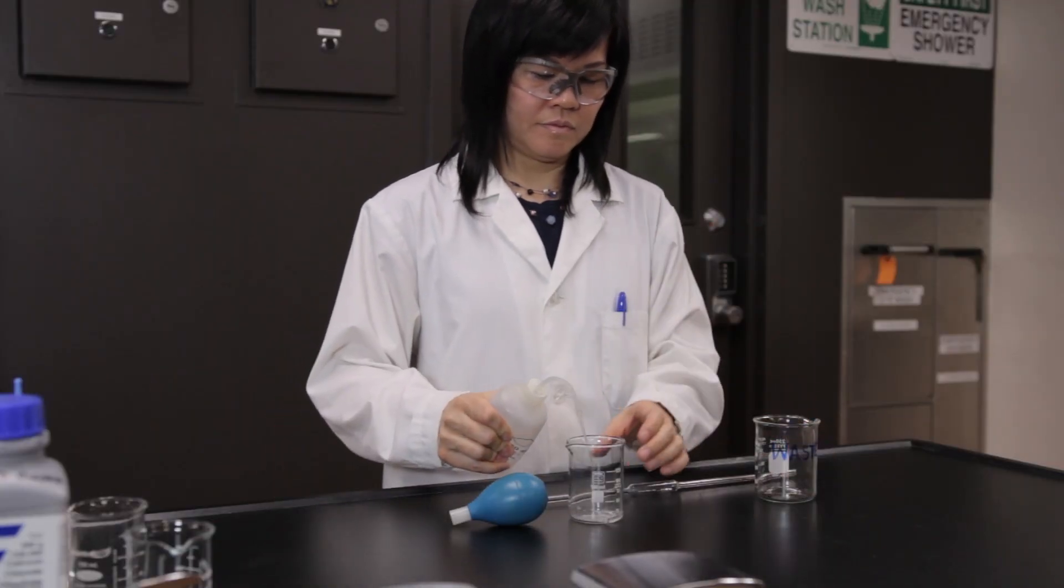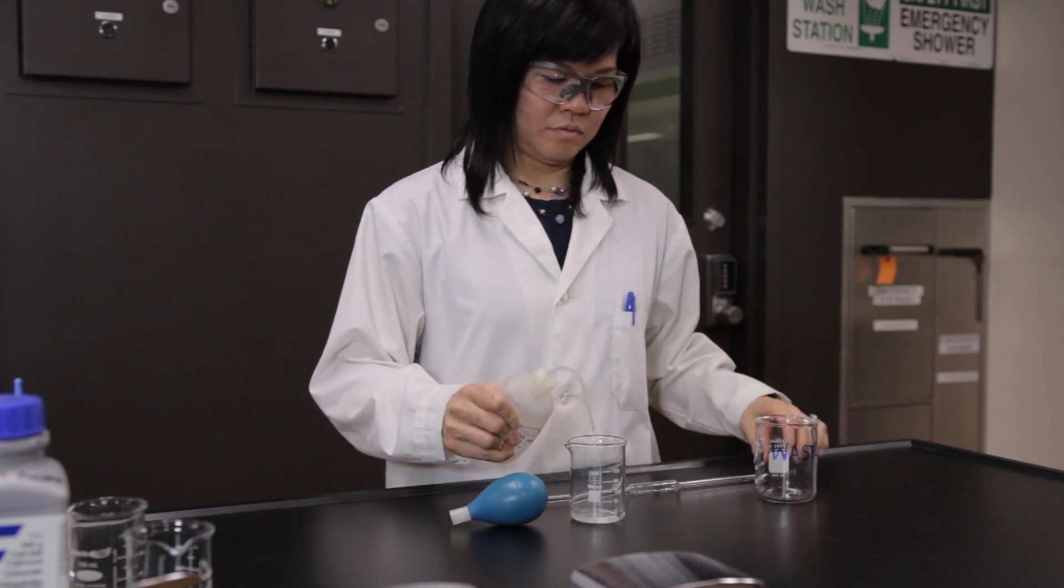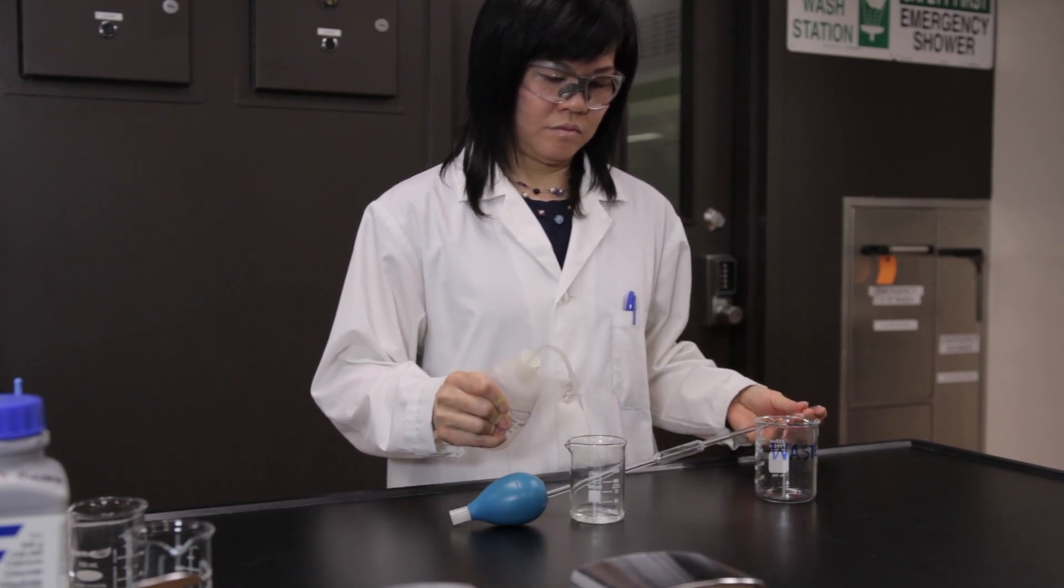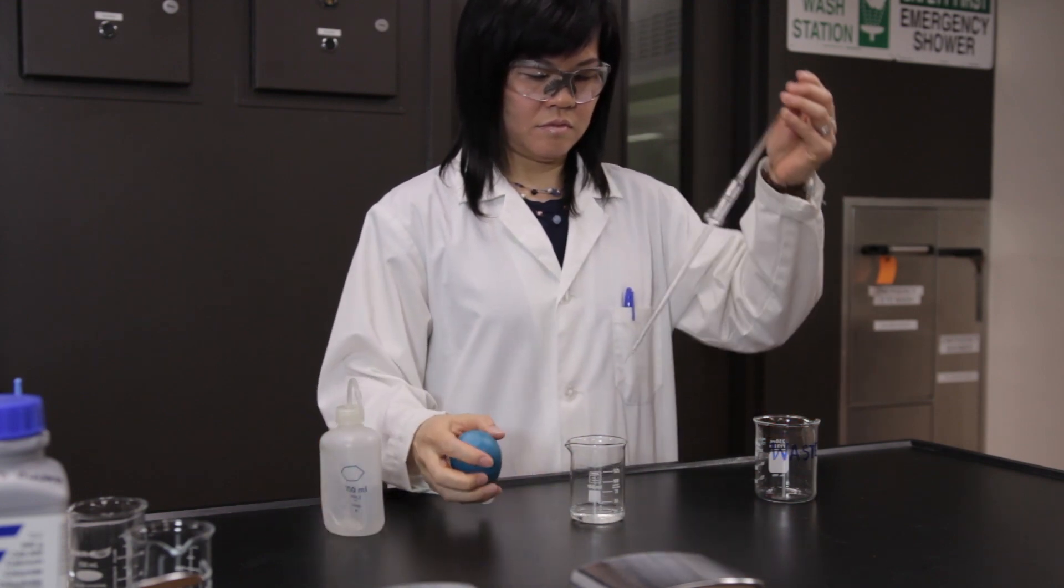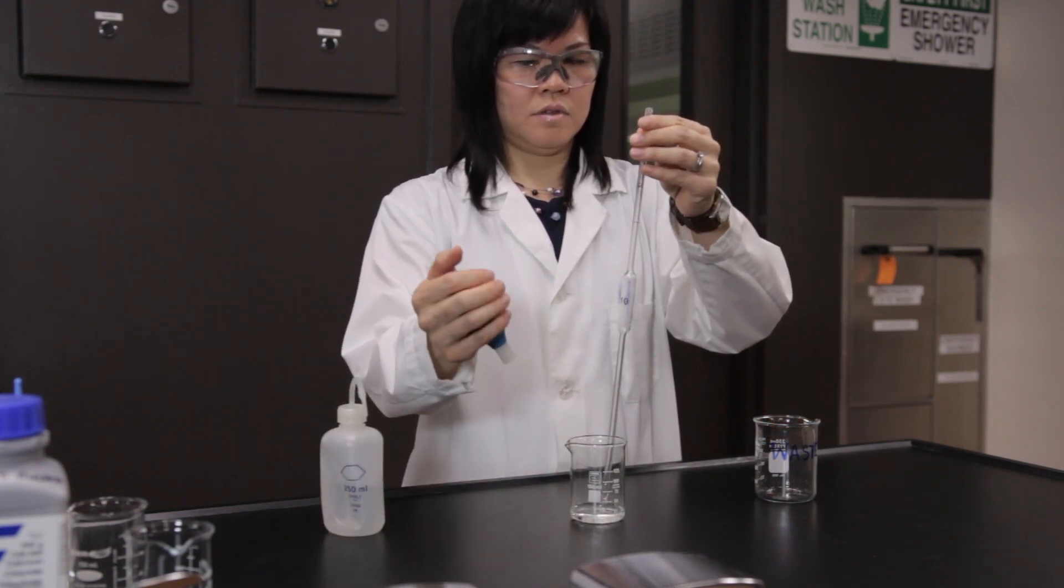Prepare a 10 milliliter volumetric pipette. First, rinse it with distilled water two times by adding distilled water into a small, clean beaker. Draw water into the pipette until it is about half full.